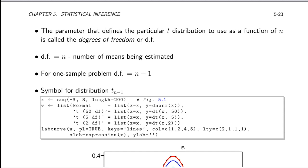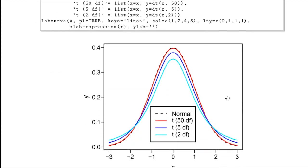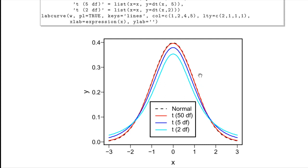The parameter that defines the particular t-distribution we're using is the degrees of freedom, which equals the sample size minus the number of means being estimated. In the one-sample problem we're estimating exactly one mean, so the degrees of freedom is n minus 1. The t-distribution with n minus 1 degrees of freedom is denoted t-sub-(n minus 1). R code shows a graph of the probability density functions for t-distributions with varying degrees of freedom against the normal distribution shown as the dashed curve.